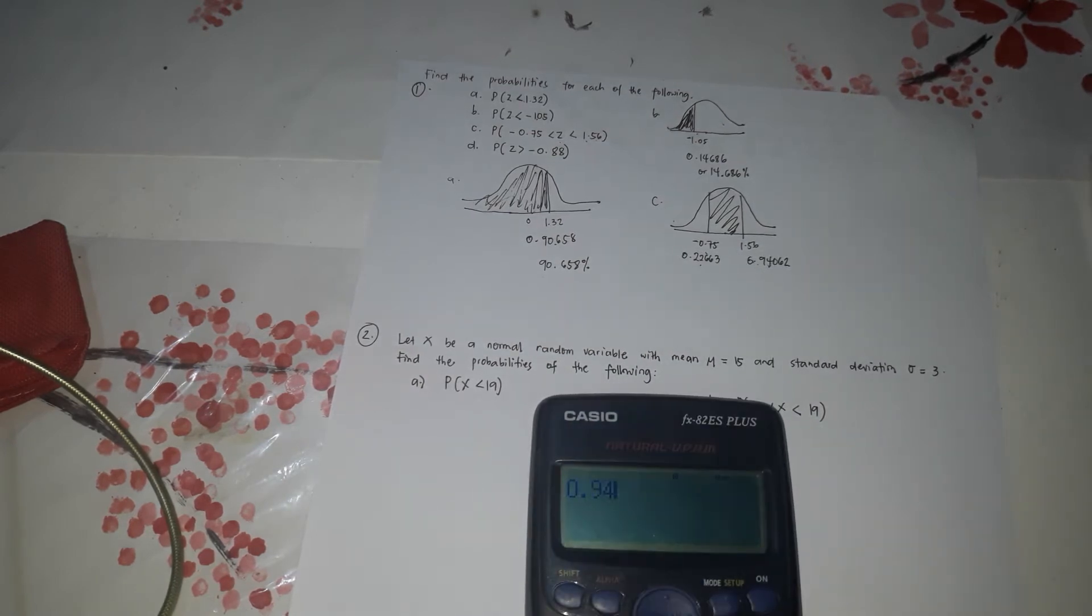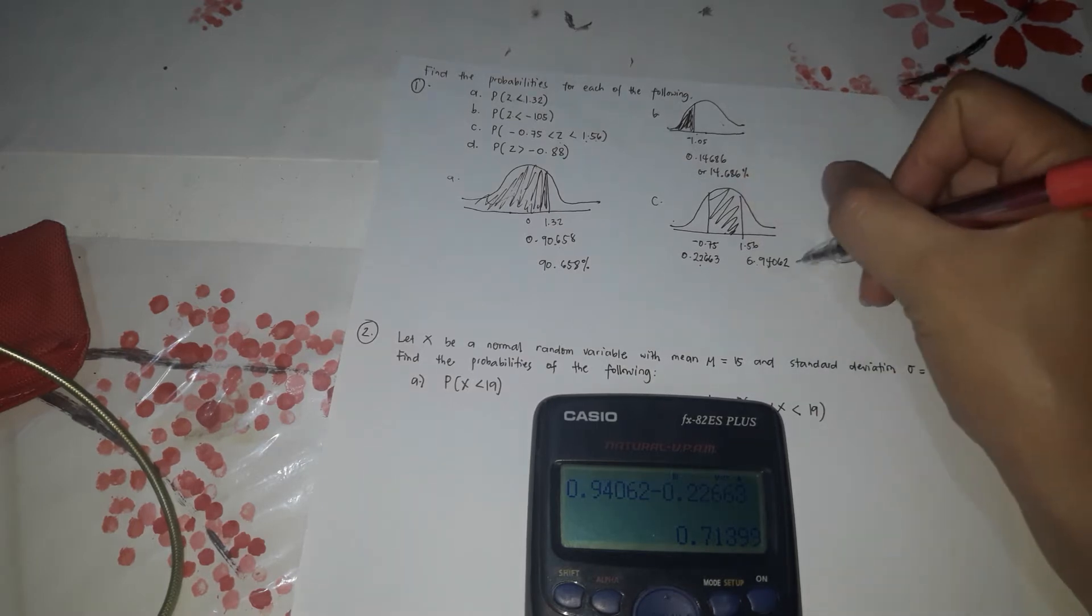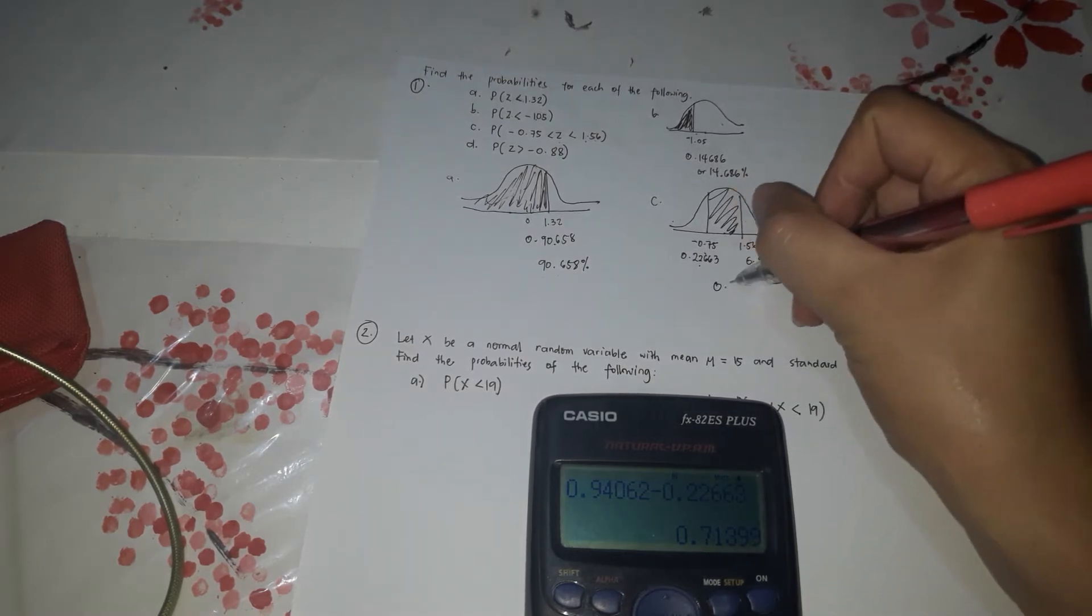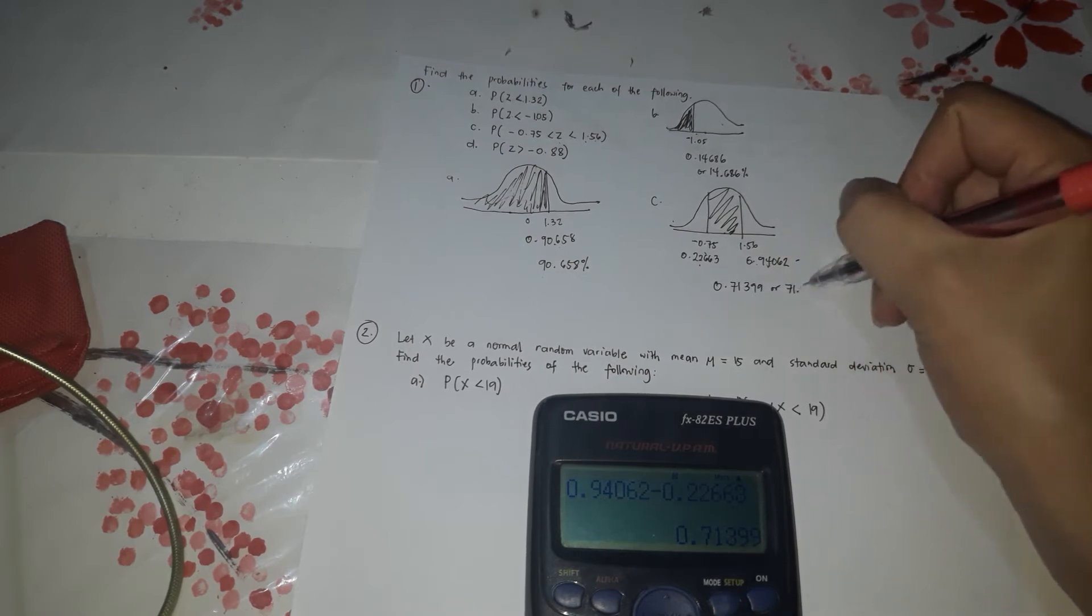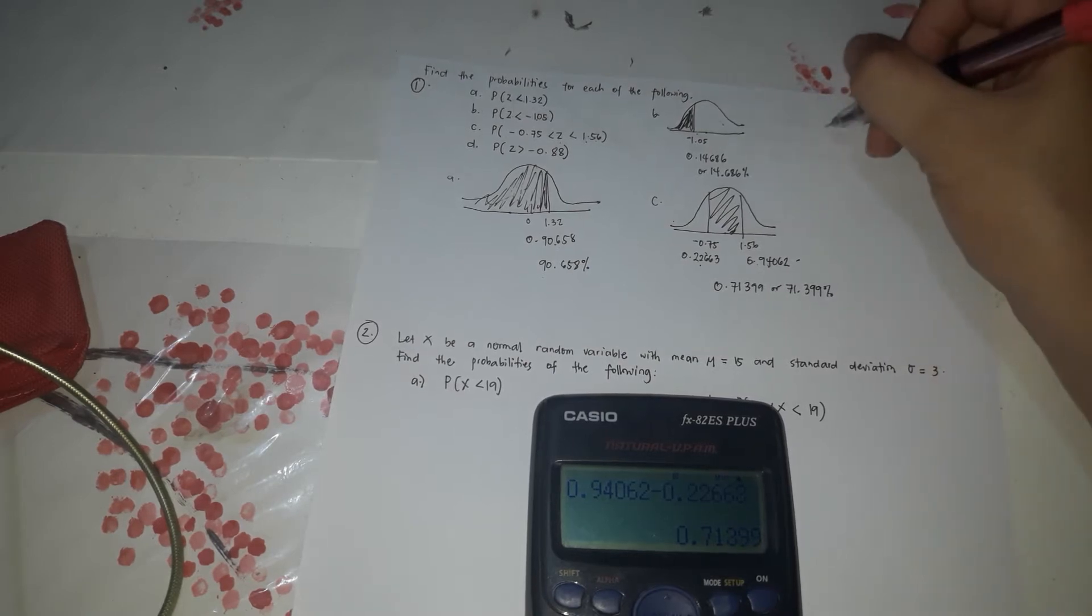0.9406 minus 0.2263. That's 0.7139. Or 71.399%. There are D.